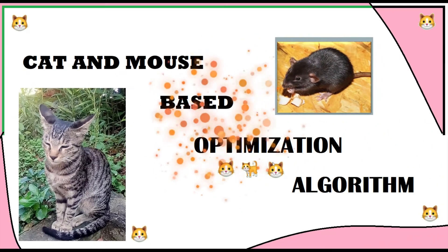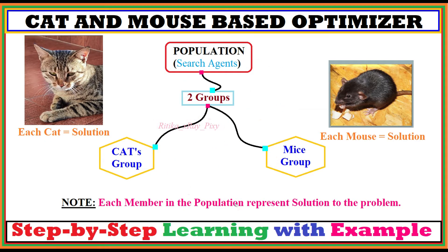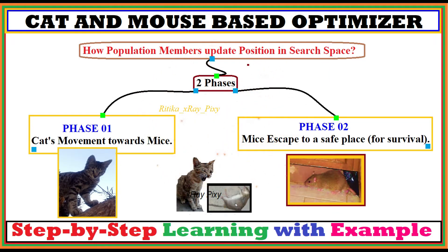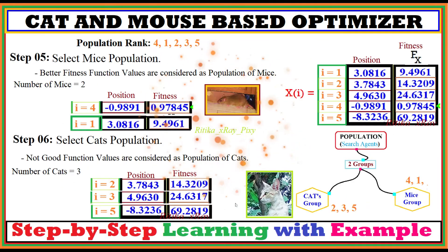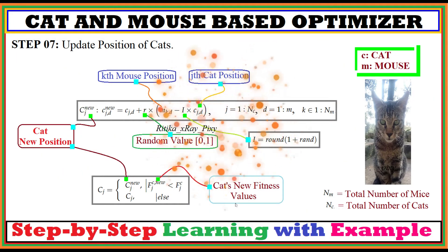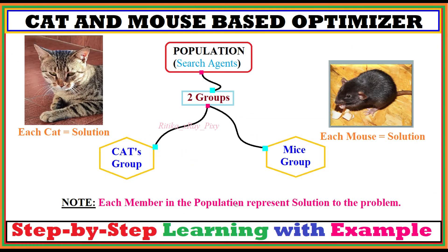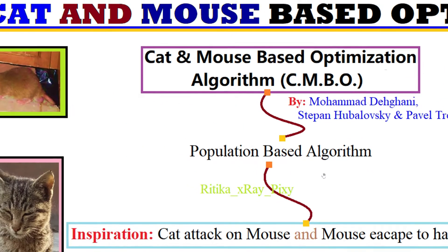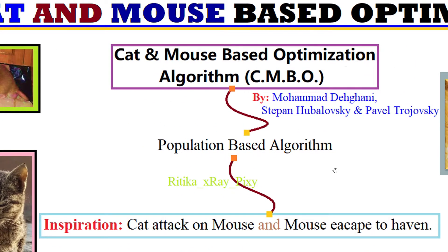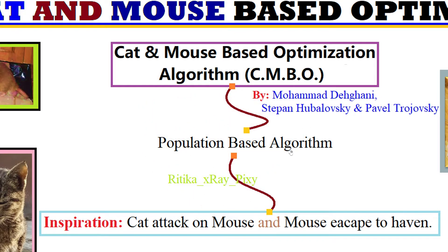This video is based on the Cat and Mouse Based Optimization Algorithm. We will try to understand what this algorithm is all about, how it works, the various steps used, and the mathematical models used for position update and movement calculation. For better understanding, we will also go through this algorithm with an example.